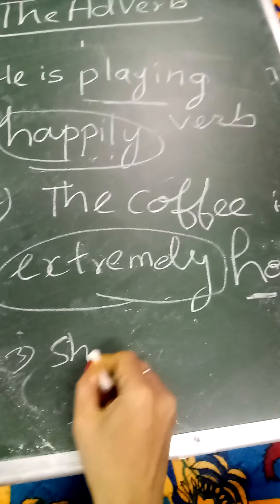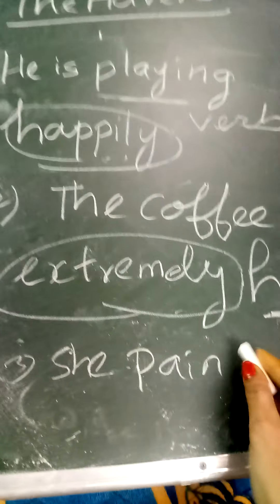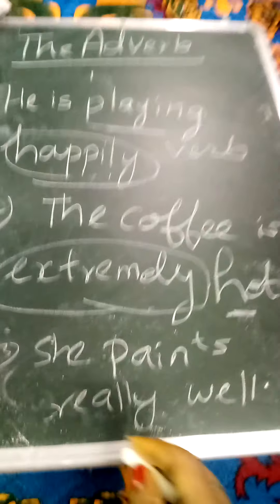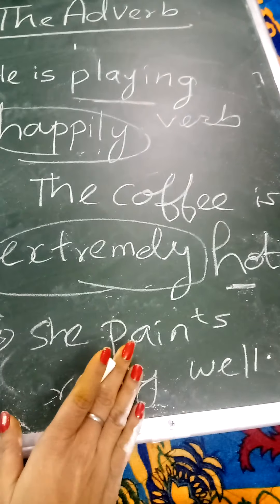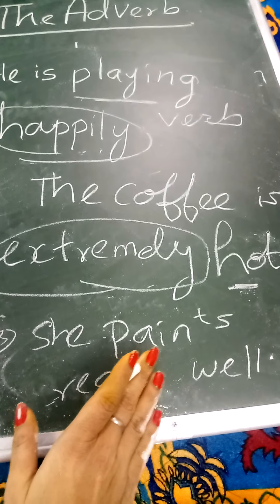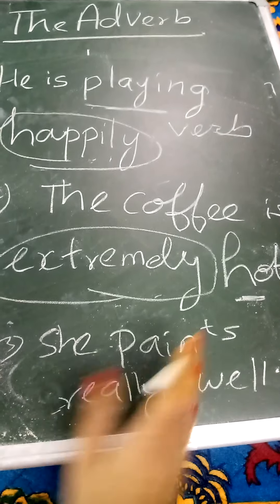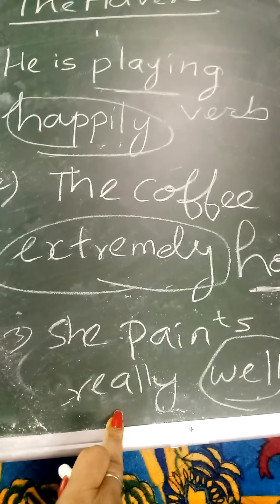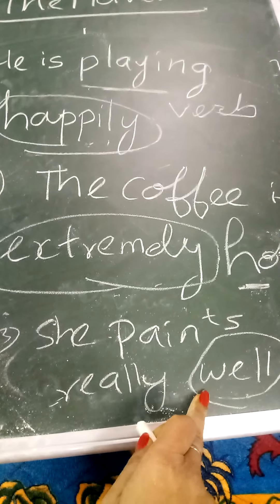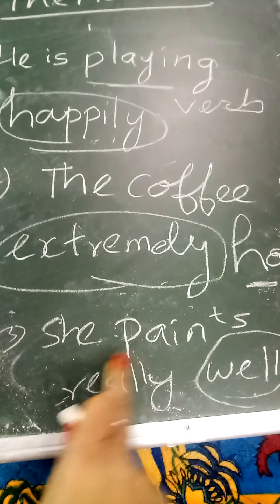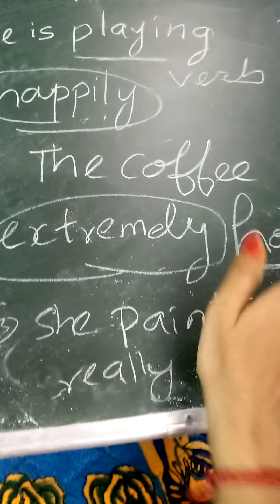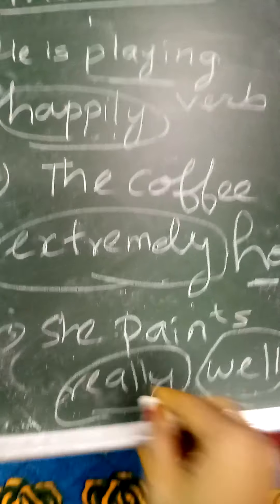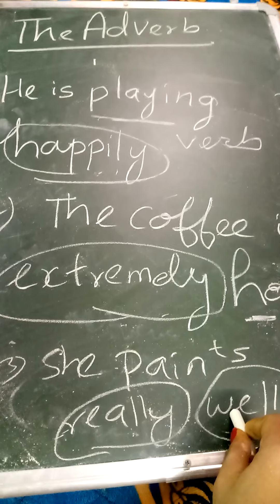Now next. Kya bataya tha ki adverb jo hai, another adverb ko bhi describe kar raha hai. She paints really well. Agar hum really hata dein — she paints well. Well kya hai? Adverb. She paints well, yani bahut achha se paint karti hai. Or, she paints really well — yaha 'really' kisko describe kar raha hai? Well ko. Ki woh wakai mein bahut achha paint karti hai. Yani, yeh well ke liye really aaya hai, paint ke liye nahi. So, really is also adverb — yani ek adverb dusre adverb ko bhi describe kar raha hai.